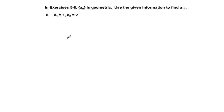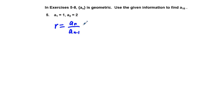We go to our next problem, number 5. Exercises 5 through 8: a sub n is geometric. Use the given information to find a sub 10. We're given a sub 1 equals 1 and a sub 2 equals 2. Our common ratio r is found by taking any term a sub n divided by its previous term a sub n minus 1. So r equals 2 over 1, which equals 2.